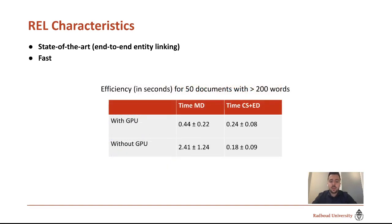REL is also fast. On average, for 50 documents with on average 323 words, the mention detection step took 0.44 seconds, and 0.24 seconds for candidate selection and entity disambiguation. We note that the mention detection step greatly benefits from GPU usage, whereas the other steps do not, mainly due to the complexity difference in the models used.